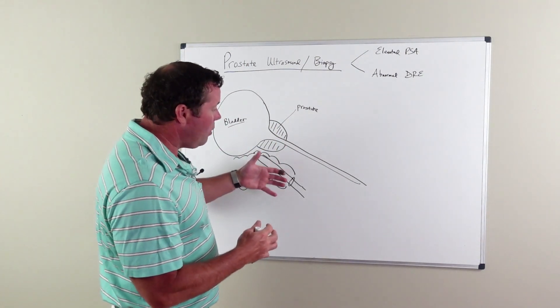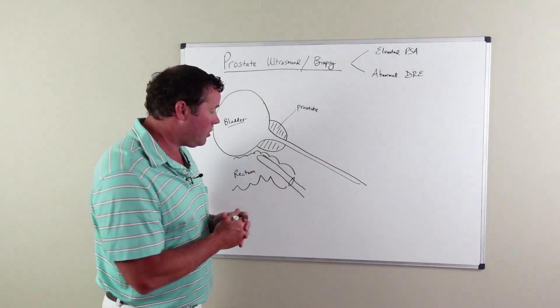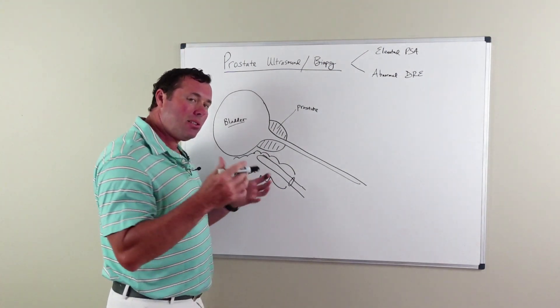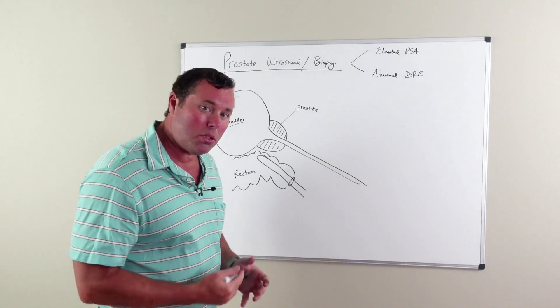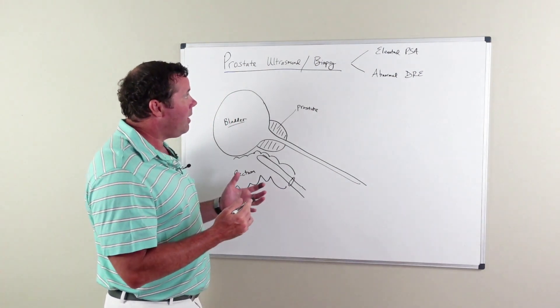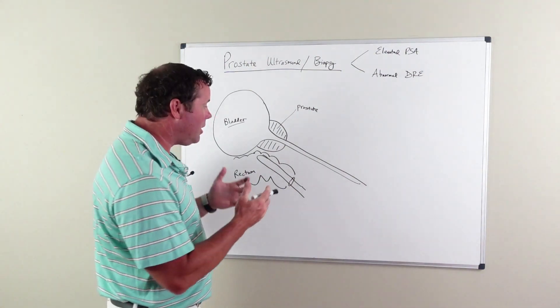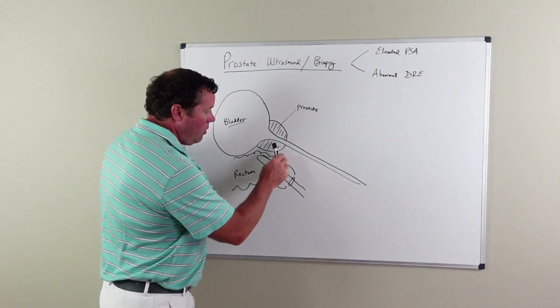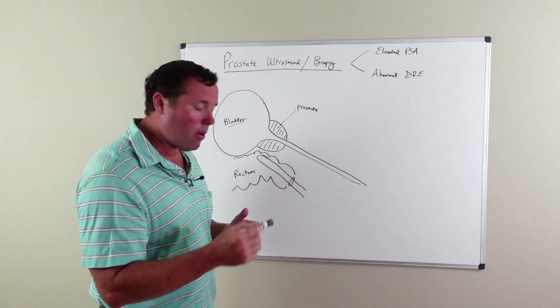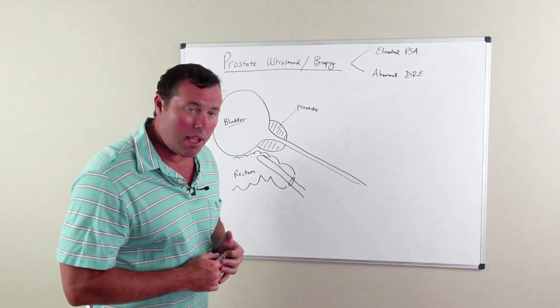With regular ultrasound, which is done in most urologists' offices, you're not necessarily going to see prostate cancer lesions that are suspicious for cancer. That's what makes the routine prostate ultrasound biopsy essentially a random biopsy, where you are placing needles into the prostate in a random manner, really trying to find these cancers.